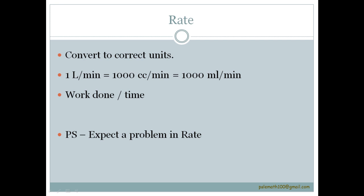Next, coming to rate. Convert to correct units that you are going to use throughout that problem. For the volume rate problem sums, one liter per minute is equal to 1000 cm3 per minute which is equal to 1000 ml per minute.